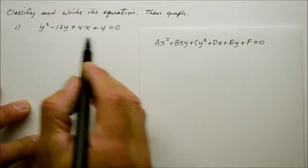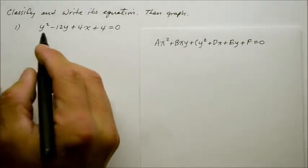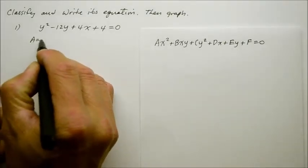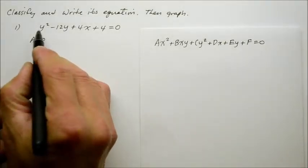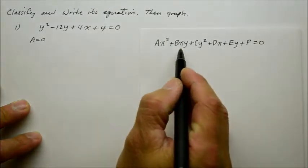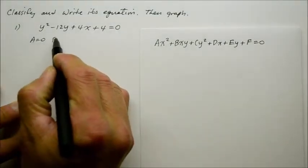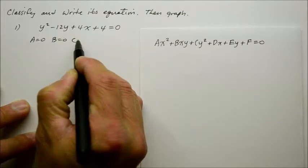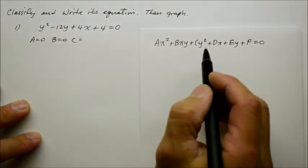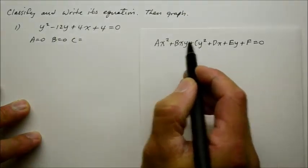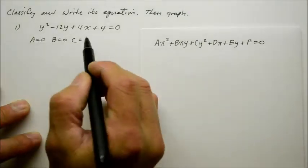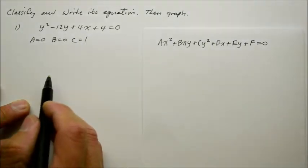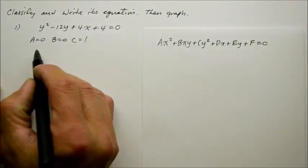And you realize, looking at the standard form, here there is no a. So a is 0. And b, identified by the coefficient in front of the xy, there is no b. So b is also 0. And c, identified by the coefficient of the y square, is finally, we have a coefficient of 1.